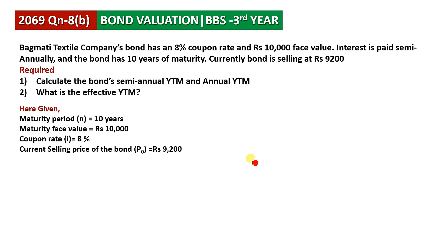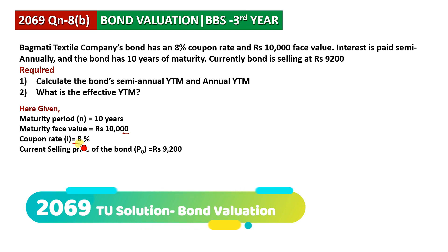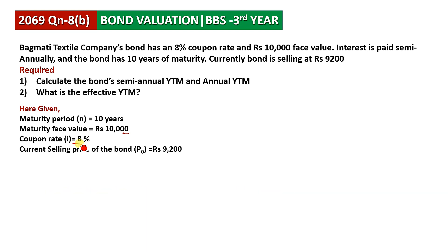The coupon rate is 8% and the current selling price of the bond P0 is 9,200 rupees. Now let's calculate the coupon payment using the face value and coupon rate. We have 8% of 10,000, which is coupon rate multiplied by face value: 8% × 10,000 = 800 rupees.